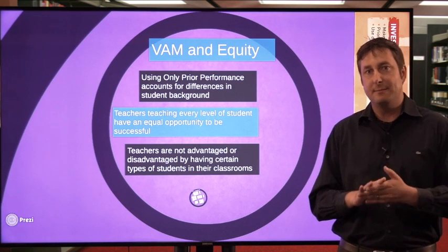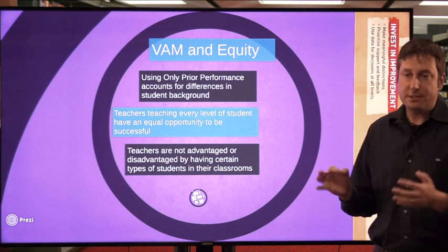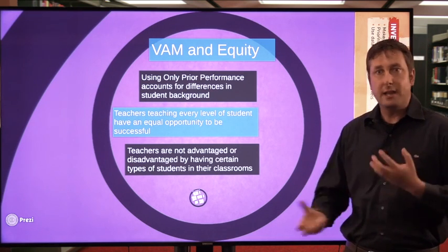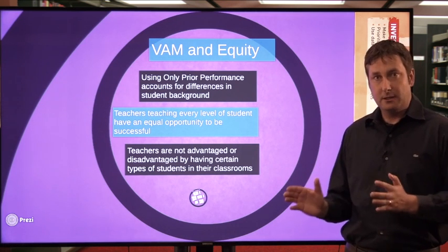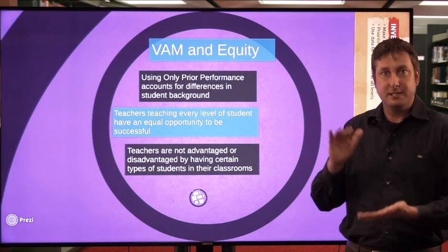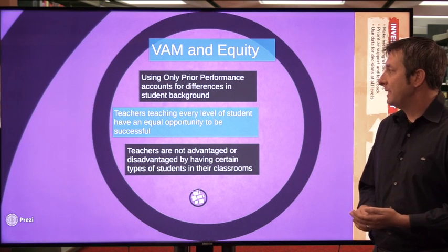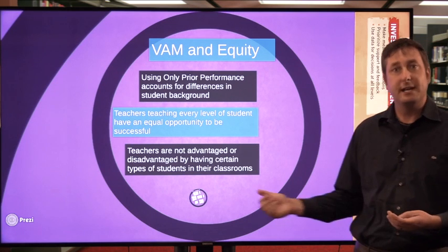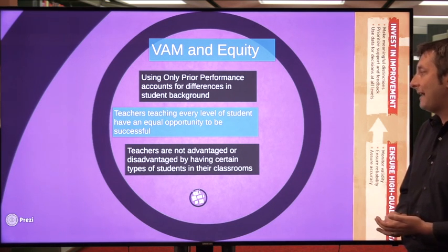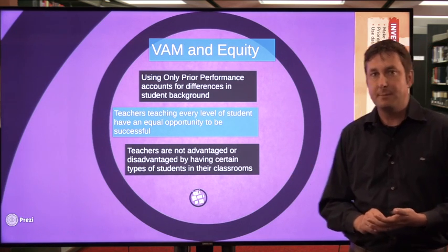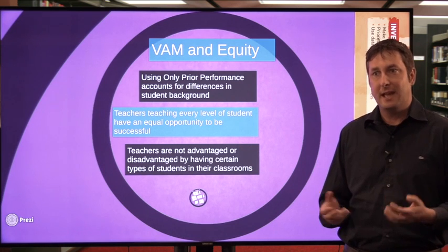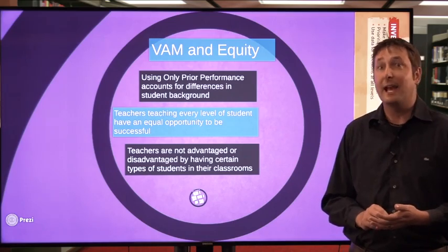That gets us to three key statements about value-added models and equity. First, using only prior performance accounts for differences in student background — we're not using student background to predict performance; we simply look at how students scored before and predict they'll score within that same range, with any differences attributed to teaching. Second, teachers teaching every level of student have an equal opportunity to be successful. Third — and this is key — teachers are not advantaged or disadvantaged by having certain types of students in their classroom.